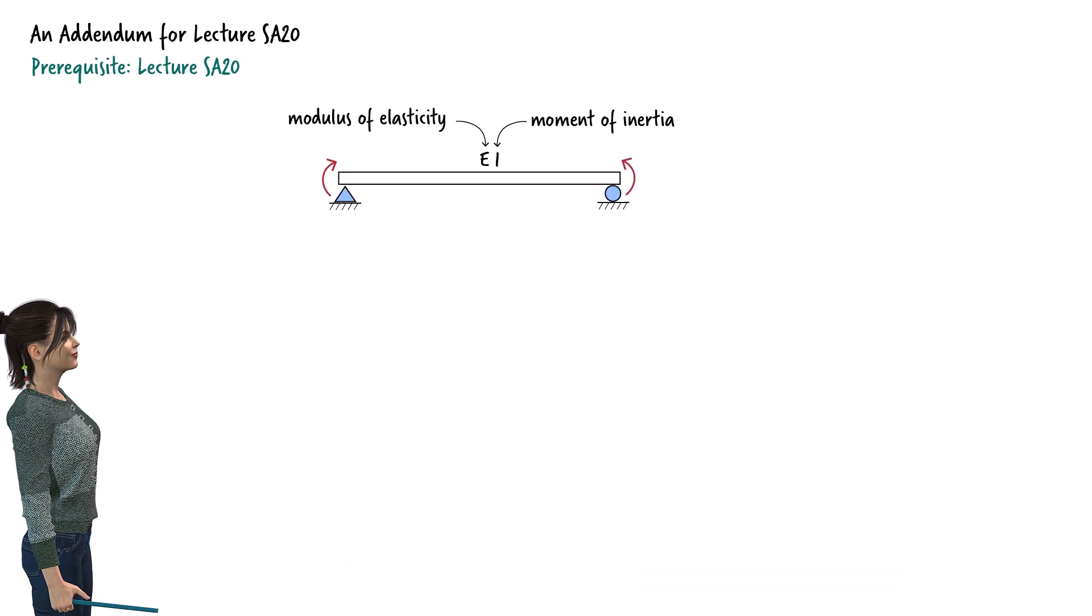Consider a beam in pure bending. I am going to refer to the modulus of elasticity of the beam's material as E, and use I for the moment of inertia of the beam's cross-section about its bending axis.